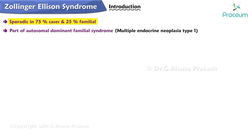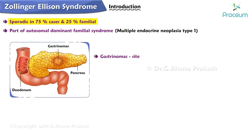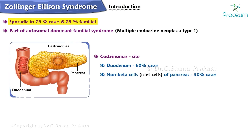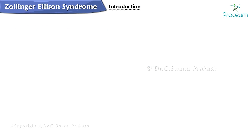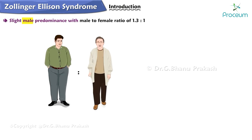The usual location of gastrinomas is in the duodenum in 60% of cases, followed by non-beta islet cells of the pancreas in 30% of cases. 60 to 90% of gastrinomas are malignant in nature.